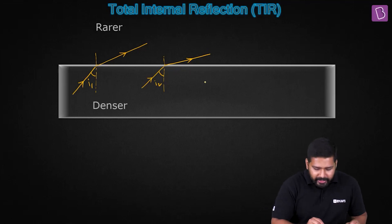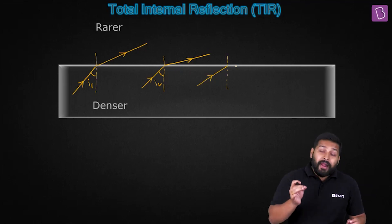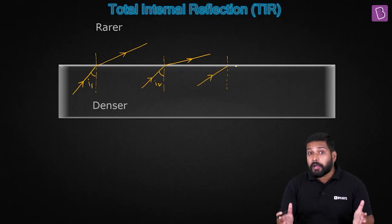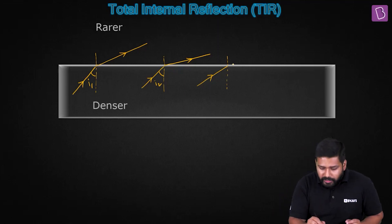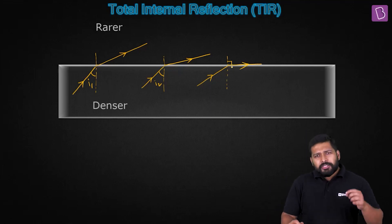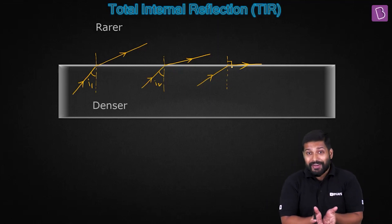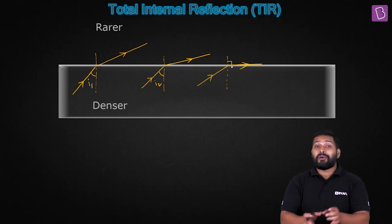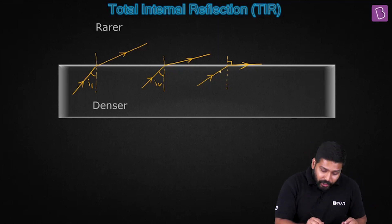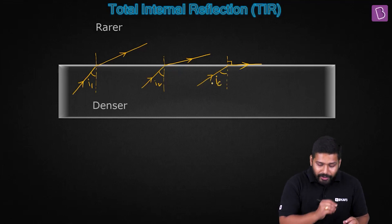Let's take another case. I increase the angle of incidence even further, and now what you see is that the refracted ray bends such that the angle of refraction becomes equal to 90 degrees, which means the refracted ray goes along the surface. This is a special angle of incidence, and when light travels from a denser to a rarer medium, we give it a special name.